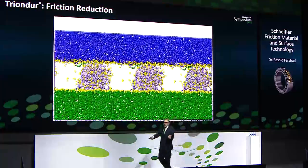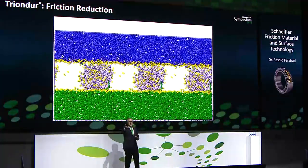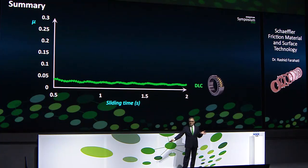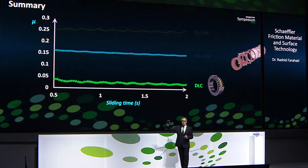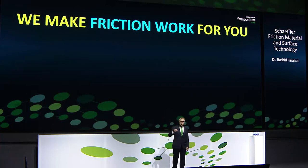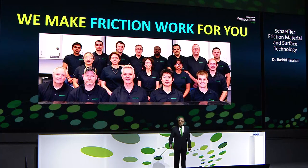How low is 0.02 to 0.03? A wet bar of soap — when you're using it in the shower — has a friction coefficient of 0.053. Our DLC coating achieves half of that. It's very slippery. To finish my presentation: in many applications you need to reduce friction, in some you need to control it, and in some you need to increase it. In all cases, we make friction work for you. Thanks again for attending this presentation.